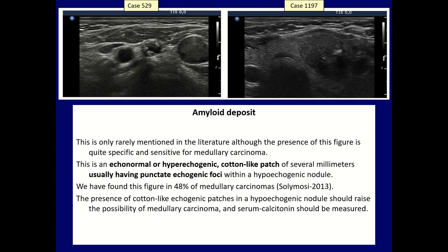We have two special forms which are rarely mentioned in the literature. Amyloid deposit is the first one. It is characterized by an echonormal or hyperechoic patch of several millimeters or even one centimeter in maximum diameter, and these echonormal patches have punctate echogenic foci — this is the ultrasound presentation of amyloid. I have found this sign very useful in the diagnosis of medullary cancer. If we see a cotton-like echogenic patch in a hypoechoic nodule, we should perform serum calcitonin determination.